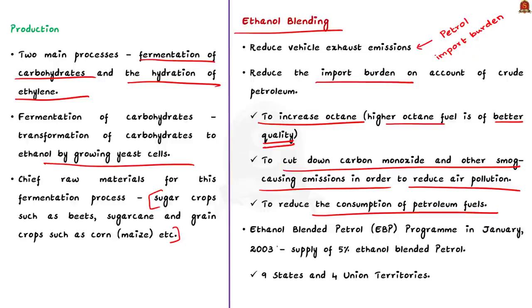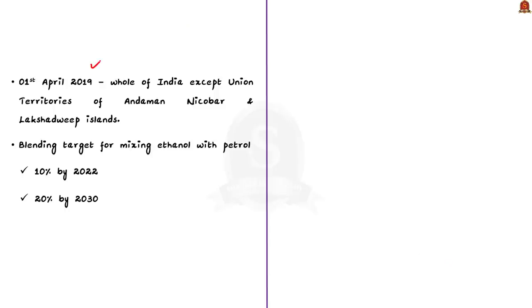India launched the Ethanol Blended Petrol program in January 2003 for supply of 5% ethanol blended petrol in nine states including Maharashtra, Gujarat, Goa, Uttar Pradesh, Haryana, Punjab, Karnataka, Andhra Pradesh, Tamil Nadu, and four union territories. With effect from 1st April 2019, the program was extended to the whole of India except the union territories of Andaman, Nicobar and Lakshadweep Islands. The government has a 10 percent blending target by 2022 and a 20 percent blending target by 2030.